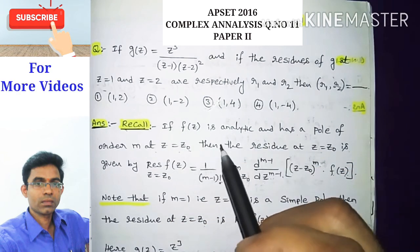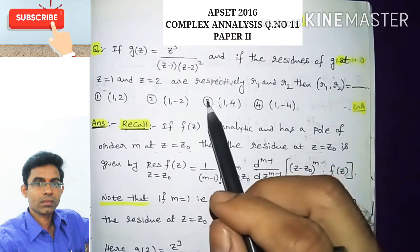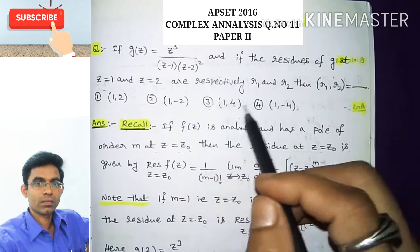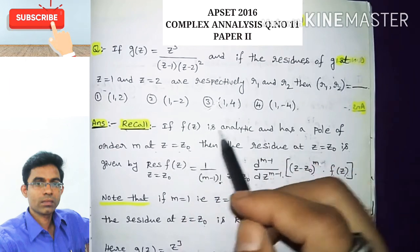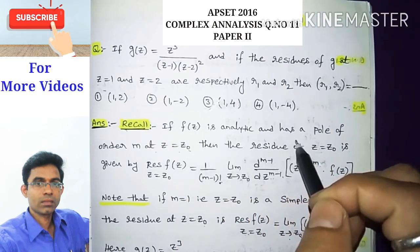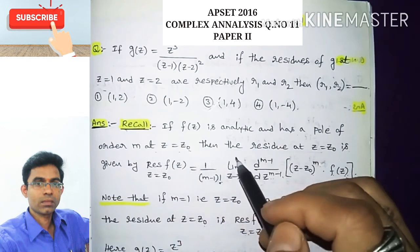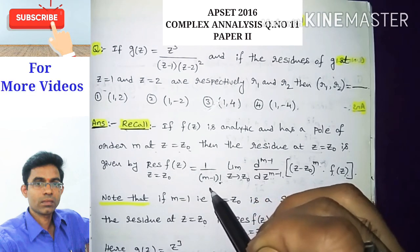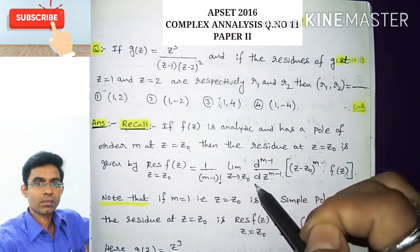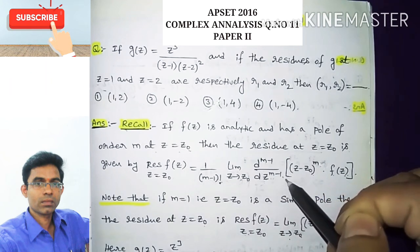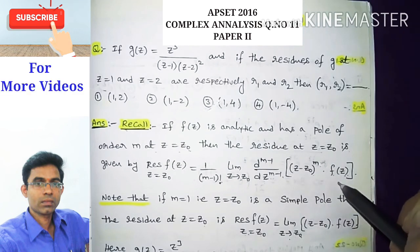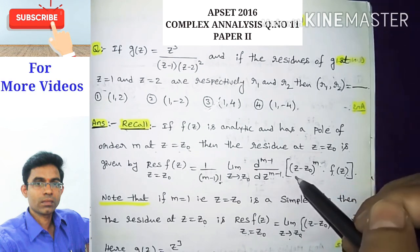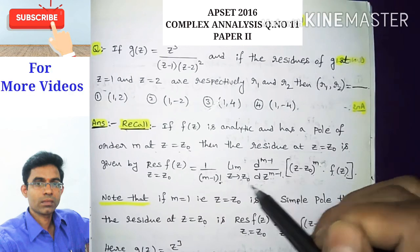Since the question is regarding residues of a function, we first recall the residue formula. If f(z) is analytic and has a pole of order m at z = z₀, then the residue of f(z) at z = z₀ is given by: 1/(m-1)! times the limit as z tends to z₀ of the (m-1)th derivative of (z - z₀)^m · f(z).